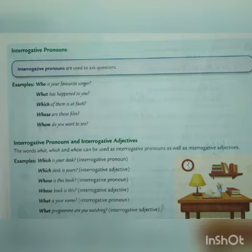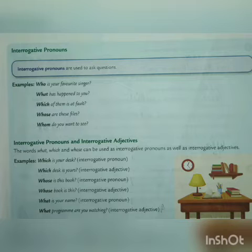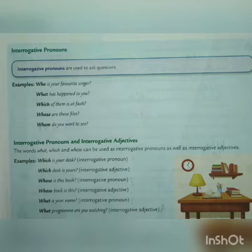For example: Who is your favorite singer? After completing this sentence, we have to put a question mark because the WH word is placed at the first. These WH words are interrogative pronouns, so you have to put an interrogative mark at the last. When we are getting a direct question, after completing the sentence, we put a question mark.